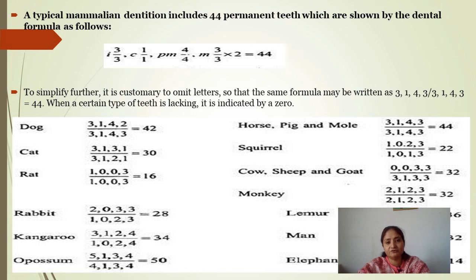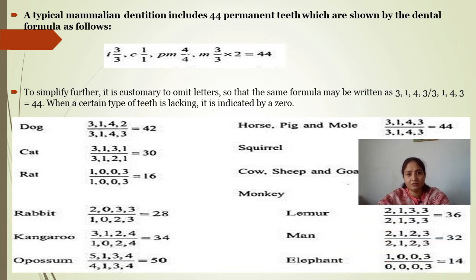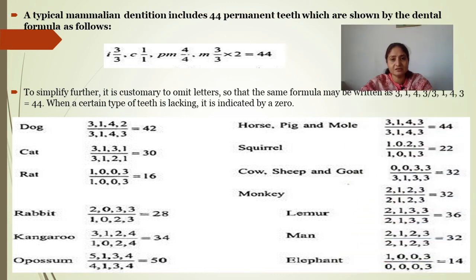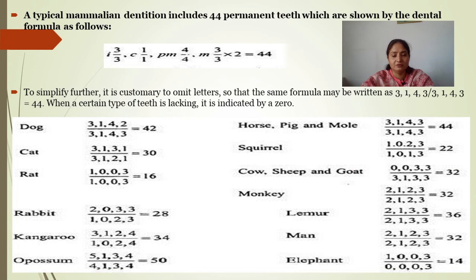The typical mammalian dental formula is 3.1.4.3 — that is 3 incisors, 1 canine, 4 premolars, and 3 molars — giving a total of 44 teeth. Humans have 32 teeth, which differs from the typical mammalian dentition.